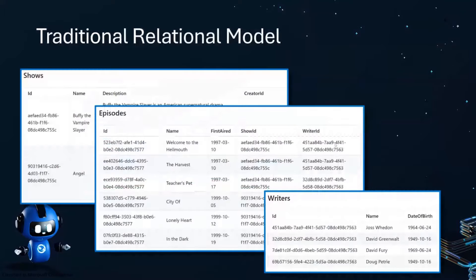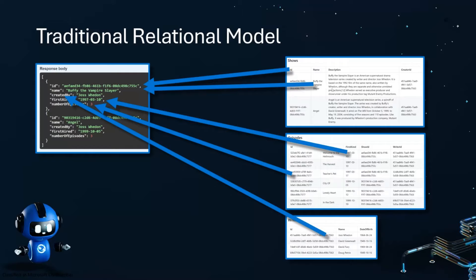In the traditional relational model, we're going to have three tables: shows, episodes, and writers. Everything for a show is in the show table, and so on for the other two tables. This can be problematic because to create this response body containing the information for show listings, we actually have to get information from the shows table, but also from the episodes table and the writers table — just to produce this simple response body. We want to do this very quickly, so it's obviously not ideal to be getting from lots of tables.